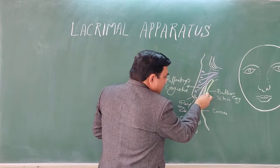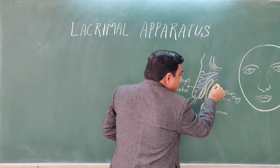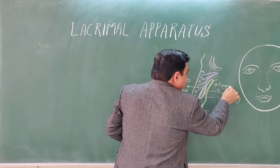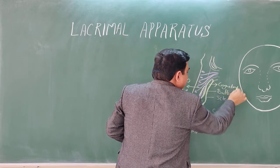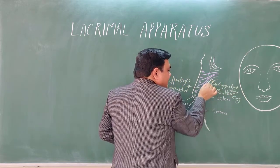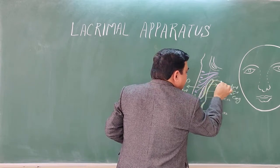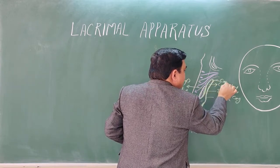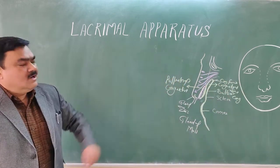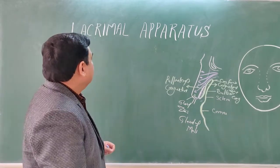Between these two layers there is a space known as the conjunctival sac. There is also a fold here known as the fornix. The lacrimal apparatus consists of several structures responsible for secretion of tear or lacrimal fluid and drainage of the lacrimal fluid.